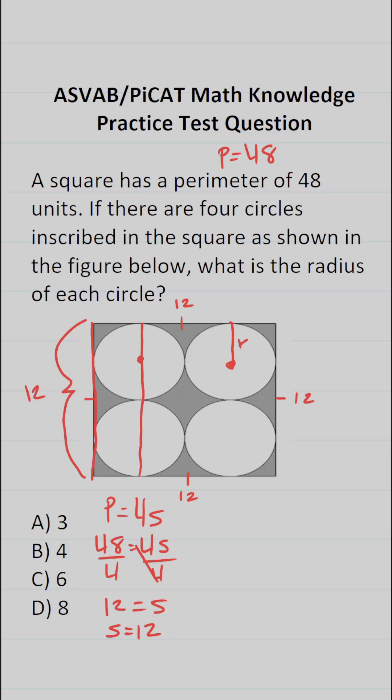If these are our center points, you can see that we have a radius here, a radius here, a radius here, and a radius here. In other words, 1, 2, 3, 4. 4R equals 12.